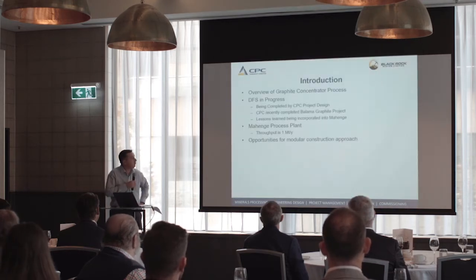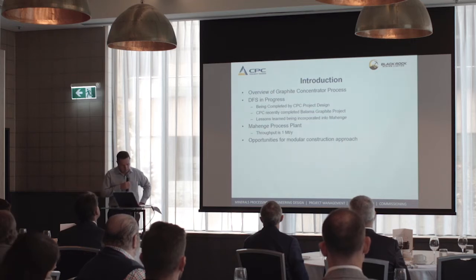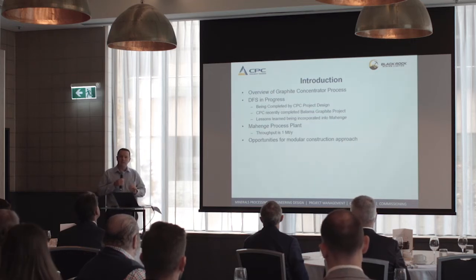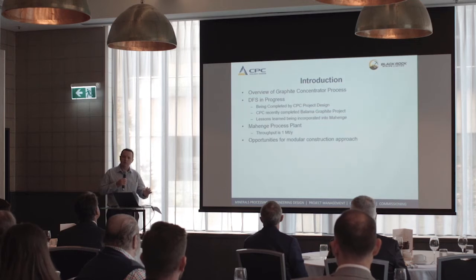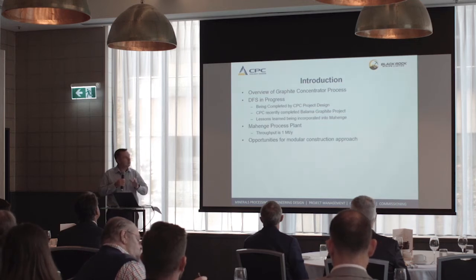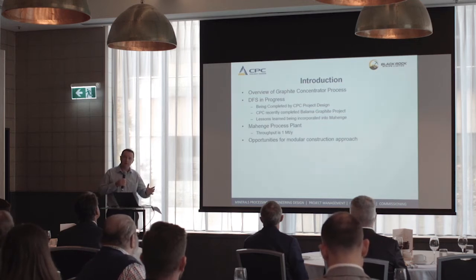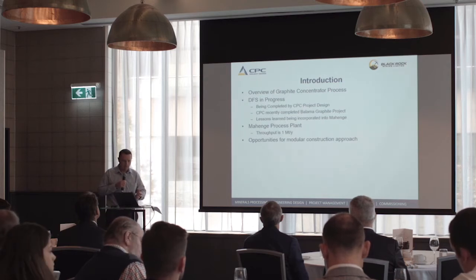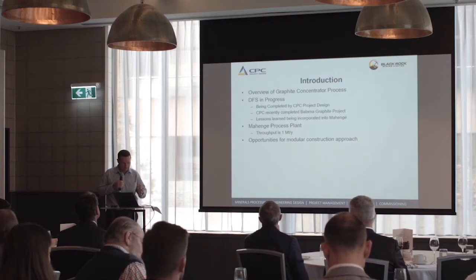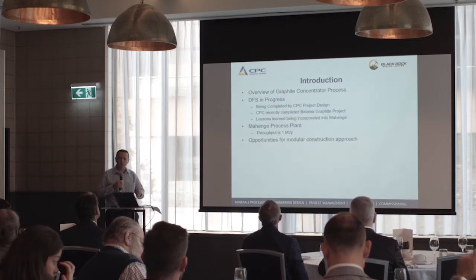Mahenge is a 1 million tonne per annum process plant. The benefit of that size is it means that we can look at modular equipment, fabricating modules off-site, shipping them to site and pre-assembly. What we're trying to do there is minimise our site work and also any risks of rework.